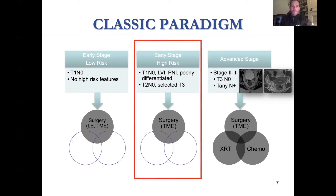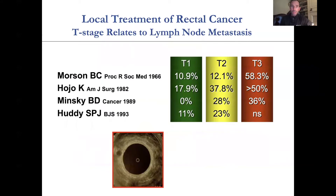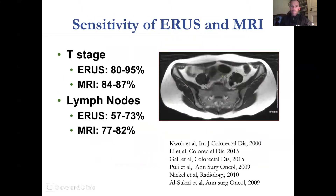For the T2 N0, and maybe select T3 lesions, these are the patients that under the classical paradigm would just undergo surgery, including a low anterior resection alone. How T-stage leads to lymph node metastases is important. For T2 lesions, anywhere between 12 and 40% will have lymph node metastases. That's important if you're talking about local excision, because that is not going to be addressed by just having local excision alone without any other therapy.